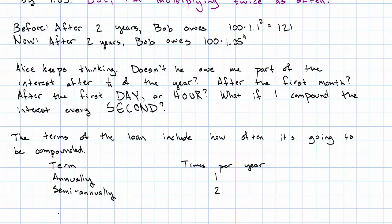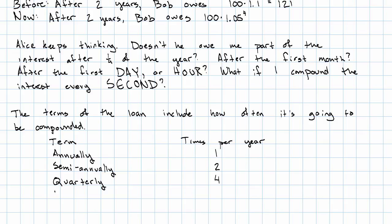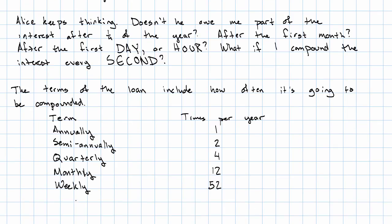If we say annually, that's just one time per year. Semi-annually is twice a year. Quarterly is four times a year. Monthly is 12 times a year. Weekly is 52 times a year. And we might go as far as daily. That's 365 times a year.